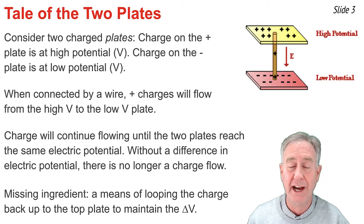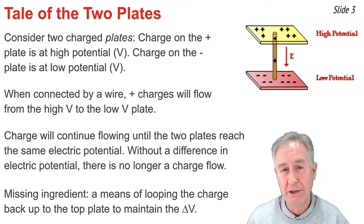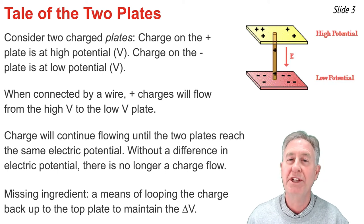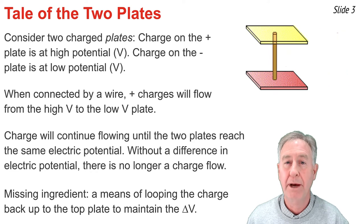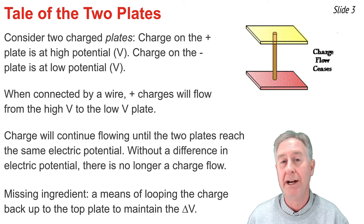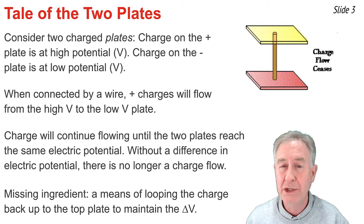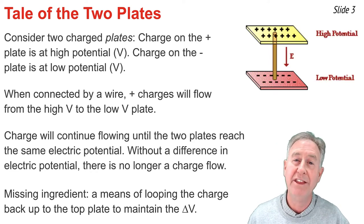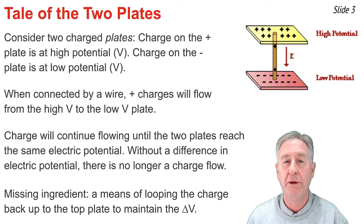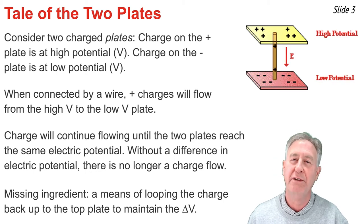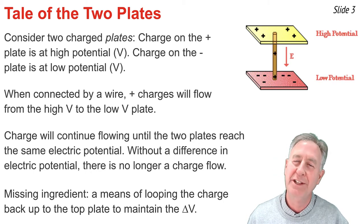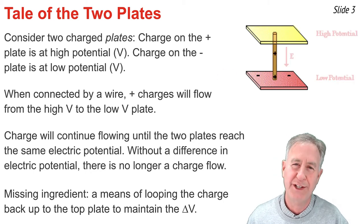While there is a charge flow between the plates, this is not an electric circuit. The missing ingredient is a way of pumping positive charges back up onto the positive plate so as to maintain the difference in electric potential, the presence of an electric field, and the continuation of the flow of charge.